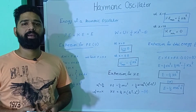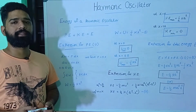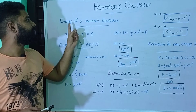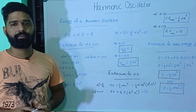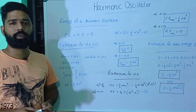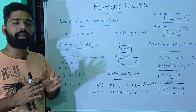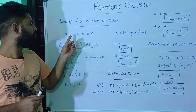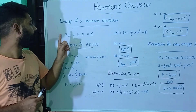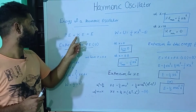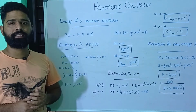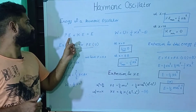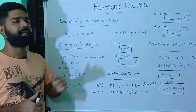Here we are discussing about the energy of a harmonic oscillator. The total energy of the harmonic oscillator is the summation of the potential energy plus kinetic energy. So the total energy is equal to potential energy plus kinetic energy.